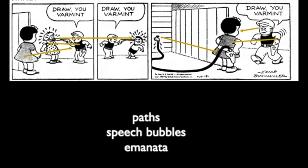The final moment isn't shown. The final moment is understood. Nancy is about to show Sluggo her squirt gun. We can imagine what's going to happen next but we don't see it. It's a gag setup but there's no final gag action within the comic — it happens immediately after. And so we laugh because we understand how to read and know what's going to happen next.